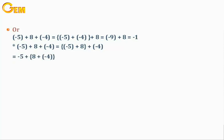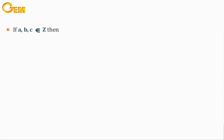If A, B, and C belong to Z, then A plus B plus C equals the sum of A and B added to C, which equals A added to the sum of B and C. We add the numbers inside the brackets first, then complete the solution.